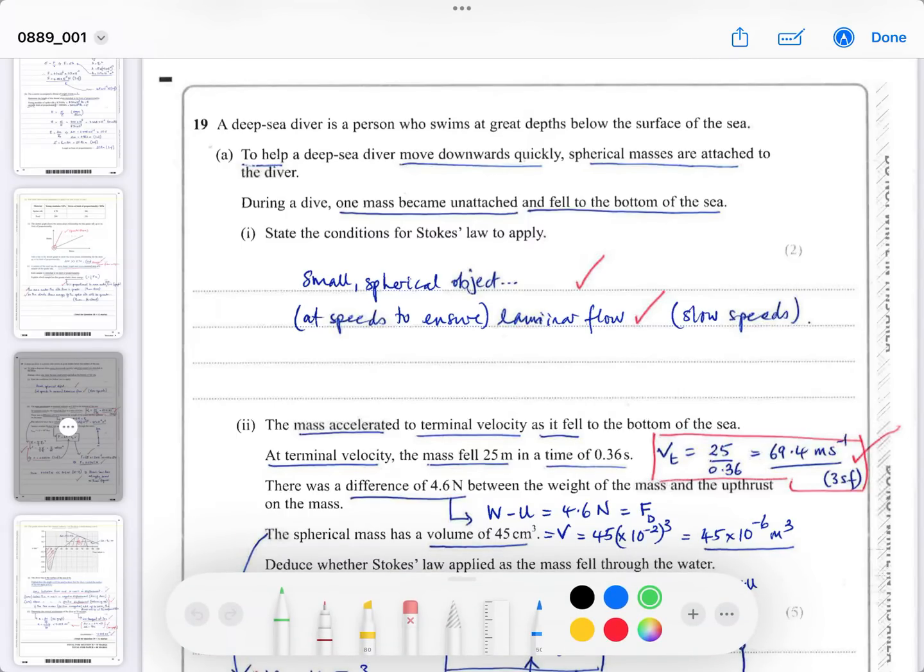It says a deep sea diver is a person who swims at great depths below the surface of the sea. To help a deep sea diver move downwards quickly, spherical masses - I'm circling spherical - are attached to the diver. There's no reason for them to be spherical except for this exam question. During a dive, one mass became unattached and fell to the bottom of sea.